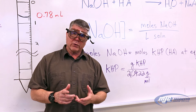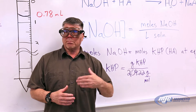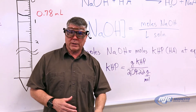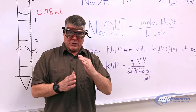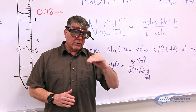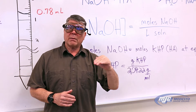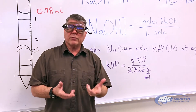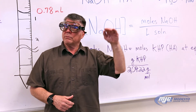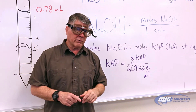The way we're going to detect the equivalence point is by using something called an indicator. The particular indicator we're going to use today is called Bromothymol Blue. There are hundreds of indicators, but what an indicator does is change color at the equivalence point. This one depends upon the pH — how many protons there are in the solution. When the pH changes from one value to another, the indicator changes color, and that tells us the equivalence point.